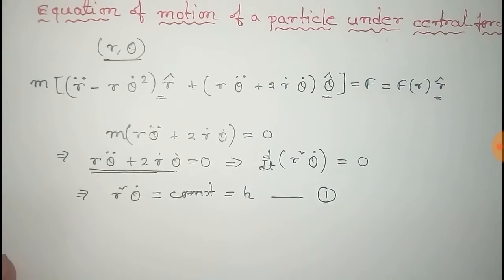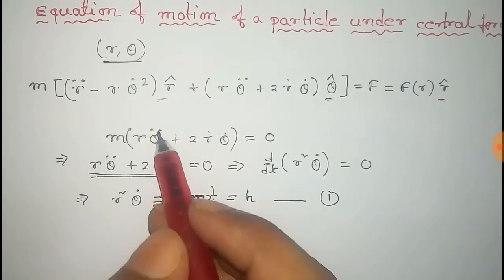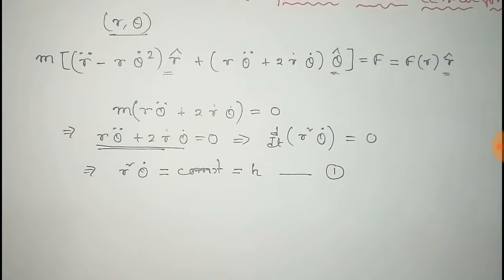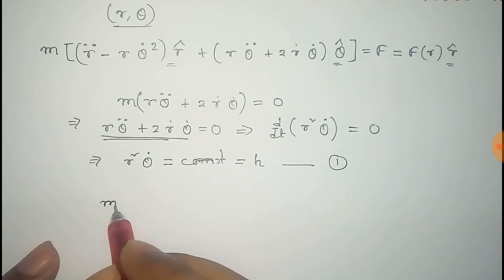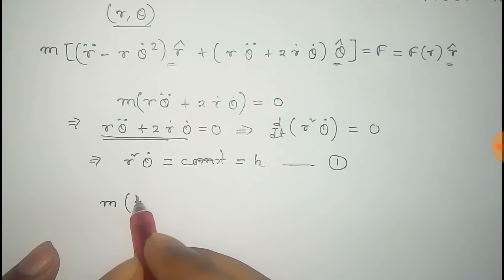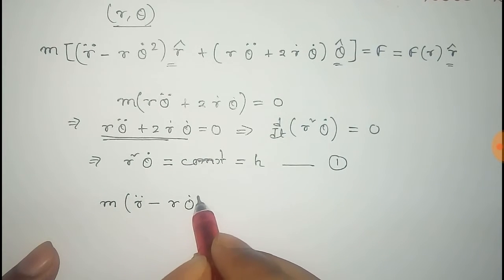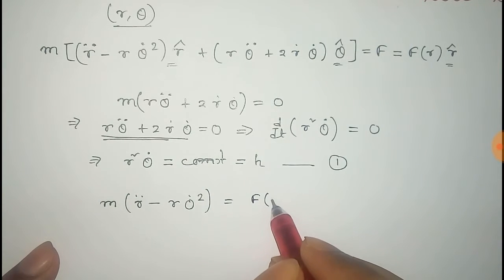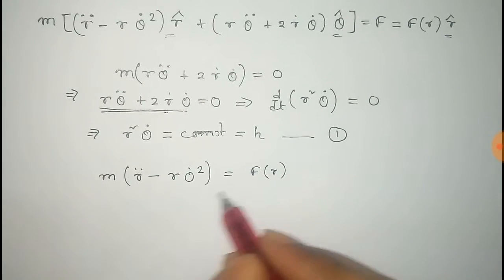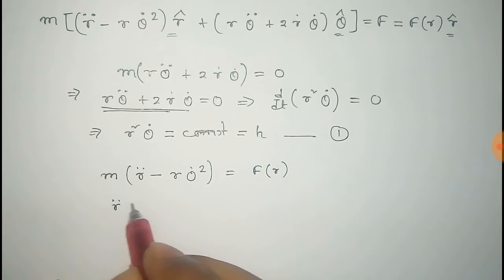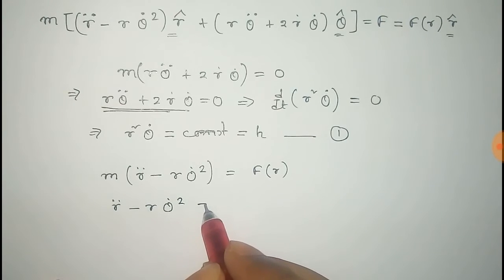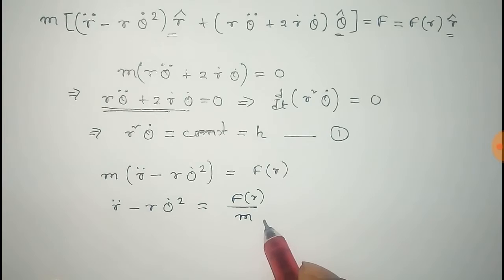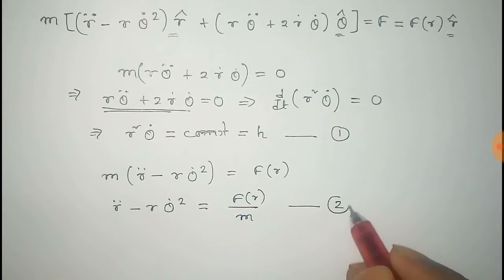Similarly, comparing the radial components on both sides gives: M times R double dot minus R Theta dot squared equals F(R). From this, R double dot minus R Theta dot squared equals F(R) divided by M. We take this as equation number two.